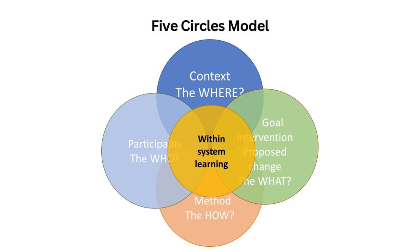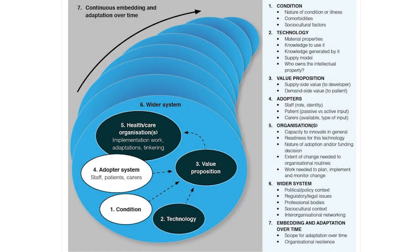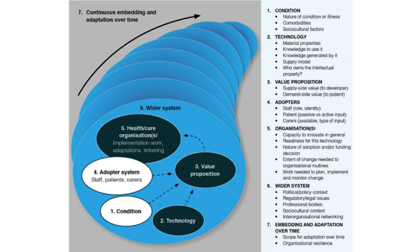What the model is basically saying is all of these things will affect implementation outcomes: the intervention itself, the context, the people involved and how they implement. The more complex each domain is, the more complex and difficult implementation will be overall. But also how these things interact with each other will determine how complex the implementation is. The NAS framework breaks down this complexity into several specific areas: the health condition being addressed, the technology itself, what's in it for stakeholders, who's adopting it, the organisation, the wider system and how it all comes together over time. Each of these areas adds its own set of complications and often its own complexity to the mix.